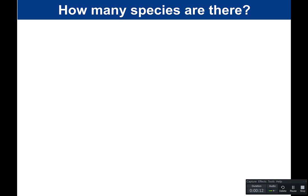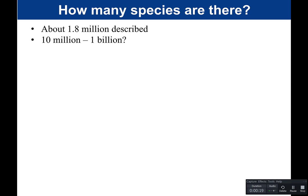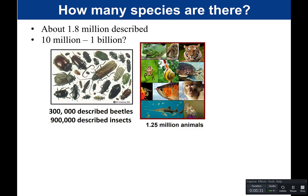How many species are there? There are about 1.8 million different species described, and estimates are that there could be between 10 million to possibly even 1 million different species. If we look at animals, there are 1.25 million recognized animal species, and estimates range that it's actually probably between 10 and 30 million. There are 900,000 described insects, and of that, 300,000 are described beetles — a lot of diversity.